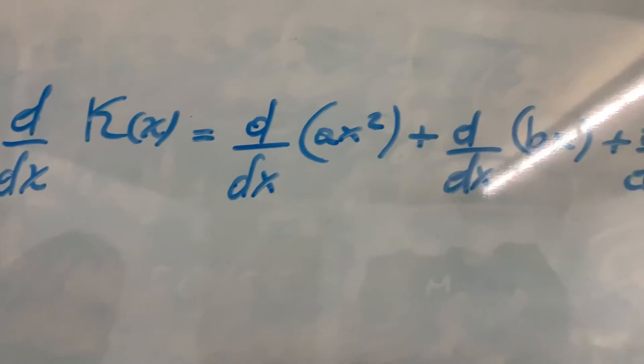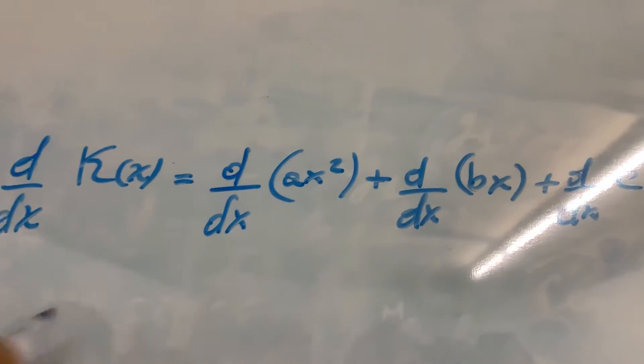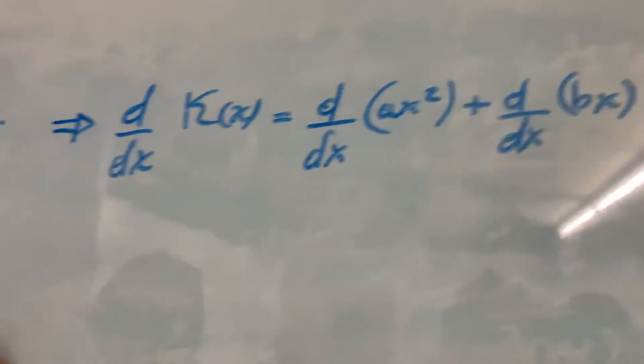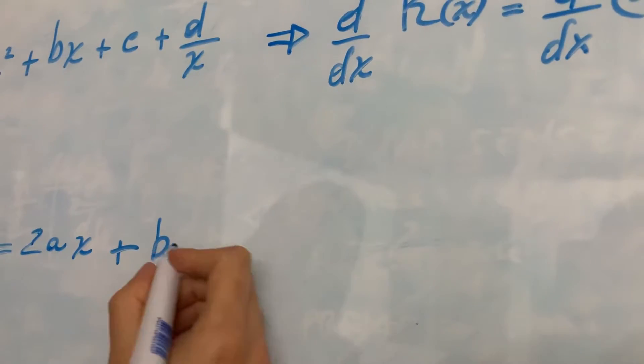Plus, here we have b with the derivative of x in the variable x which is 1. 1 multiplied by b is b.